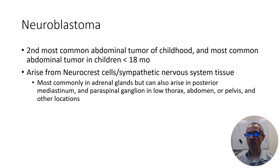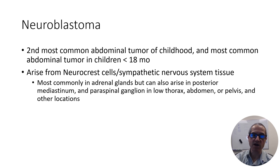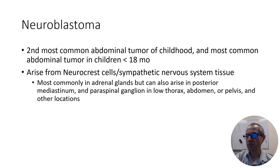Some background on neuroblastoma: it is the second most common abdominal tumor in childhood and the most common abdominal tumor in children less than 18 months. It arises from neural crest cells or sympathetic nervous system tissue. The most common site of origin is the adrenal glands, but it can also arise in the posterior mediastinum, the paraspinous ganglion in the low thorax, the abdomen, the pelvis, or other locations.